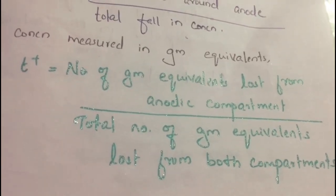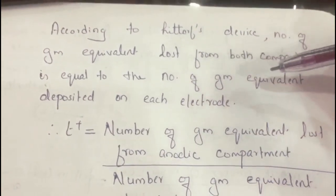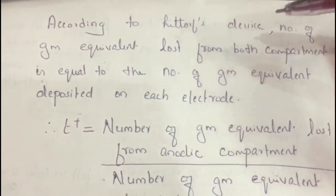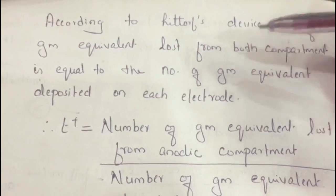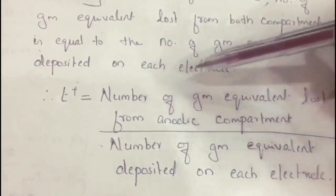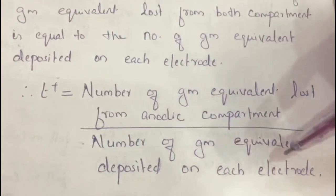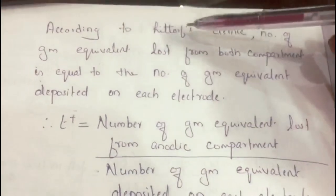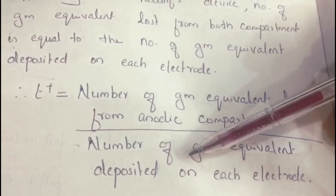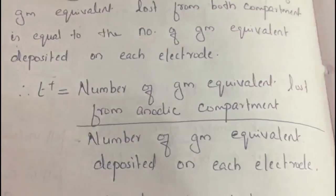According to the Hittorf device, the number of gram equivalents lost from both compartments equals the number of gram equivalents deposited on each electrode. So T+ equals number of gram equivalents lost from both compartments divided by number of gram equivalents deposited on each electrode. Since what is lost from one compartment is gained at the other, T+ equals number of gram equivalents lost from the anodic compartment divided by number of gram equivalents deposited on each electrode.